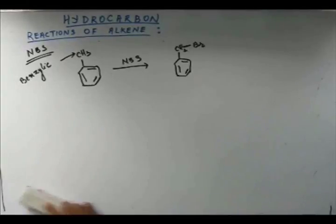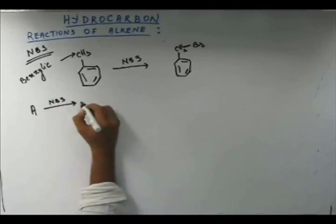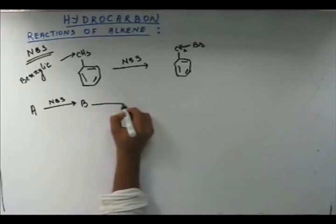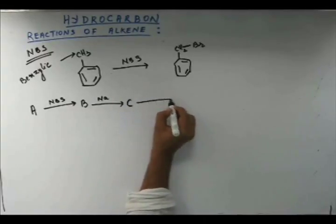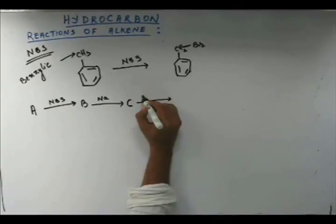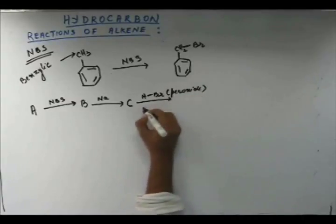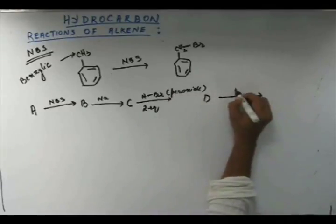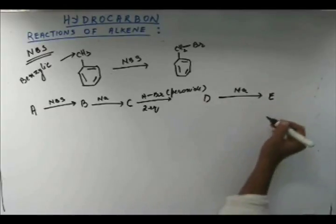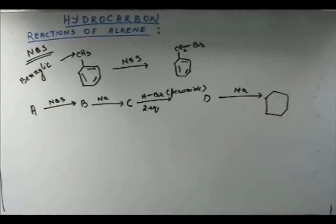Let's solve one last problem from this reaction. I have compound A. I add NBS to get B. I add sodium metal to B to get C. Then I add HBr with peroxide — two equivalents — to get D. Again I add sodium to D to get E. And E is given to be cyclohexane. You have to identify what A, B, C, and D are.